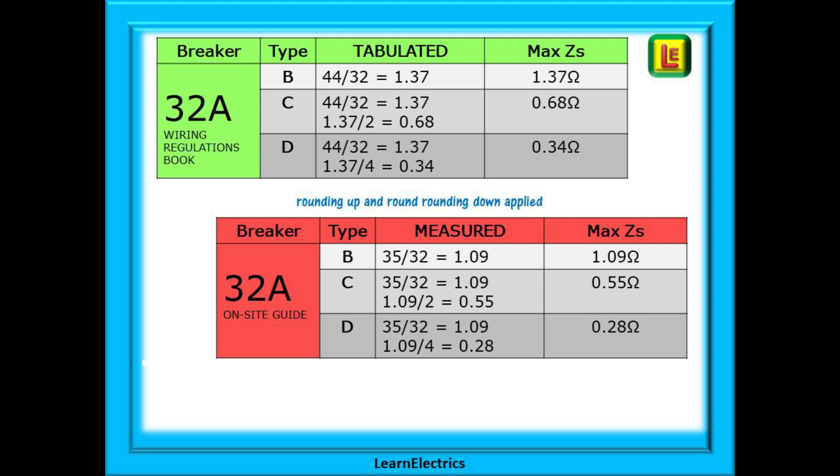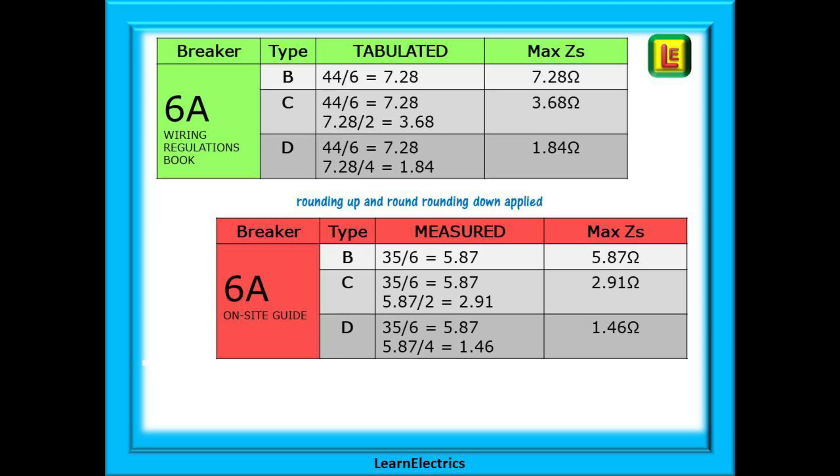The tabulated values are in the upper table and the measured values in the lower table. Another popular breaker size, especially with domestic work, is the six amp device — the upper table shows tabulated values and how we achieve them, and the lower table shows measured values. Hopefully you have learned how to quickly and easily calculate ZS values without the need for books. When you become good at mental arithmetic and manipulating numbers you may not even need a calculator. The best way to become good at these is to practice — the more you practice, the more it becomes part of your long-term memory.